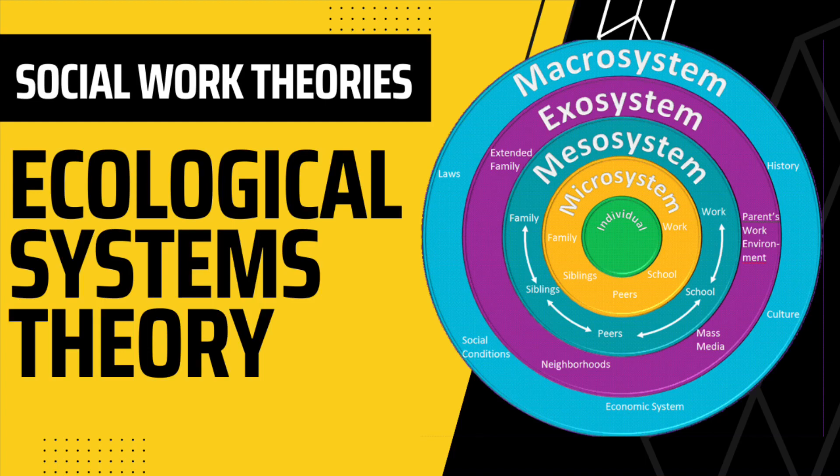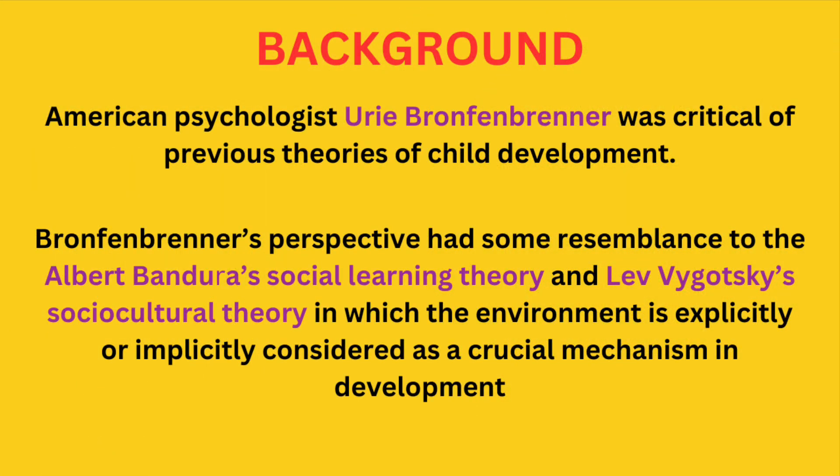The social work theory we are going to discuss today is the ecological systems theory, also known as human ecology theory. The ecological systems theory states that human development is influenced by different types of environmental systems. It was formulated by famous psychologist Urie Bronfenbrenner. This theory helps us understand why we behave differently when we compare our behavior in the presence of our family versus when we are in school or at work.